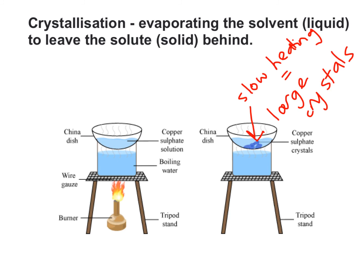This heating causes the liquid part — the solvent — to evaporate, turning into a gas and leaving the dish. What is left behind are copper sulfate crystals, copper sulfate being the solute, the solid. So we evaporate off the solvent and it leaves the dish, leaving the copper sulfate behind. When this process is carried out slowly — with slow heating — very large crystals of copper sulfate can be formed.